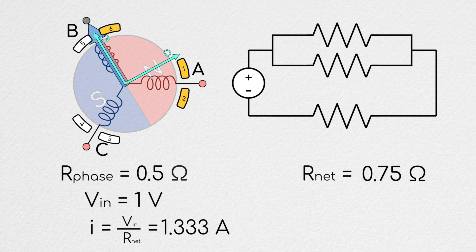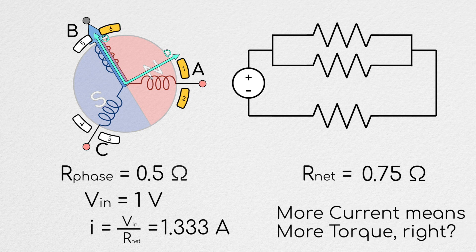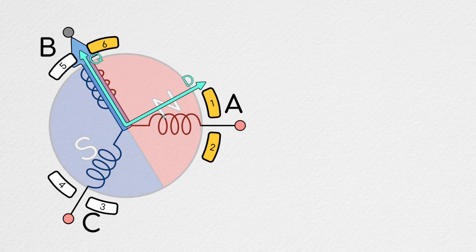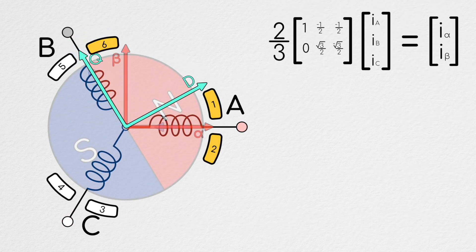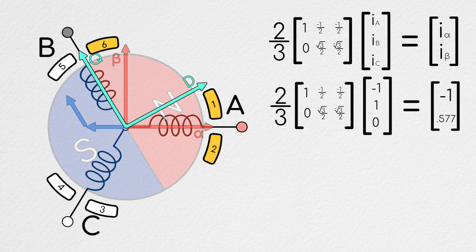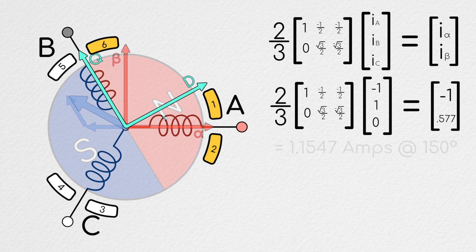At first, it might seem like if we're applying 33% more current, we would be generating 33% more torque. However, here we need to go back to our Clark and Park transformations from last episode. If we look at the summation of the vectors, we can see that while using two phases doesn't produce parallel vectors, the vectors produced largely add constructively.